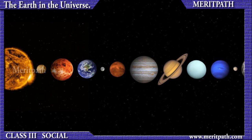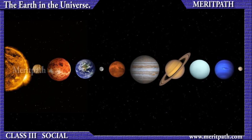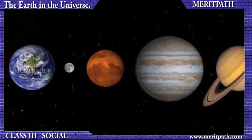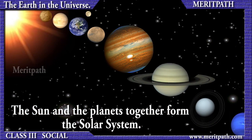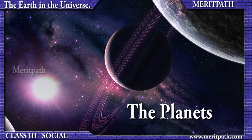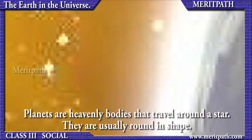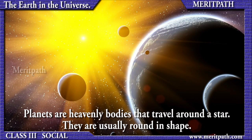The eight major planets are Mercury, Venus, Earth, Mars, Jupiter, Saturn, Uranus, and Neptune. These planets are much bigger than Earth but very lightweight for their size. The Sun and the planets together form the solar system.